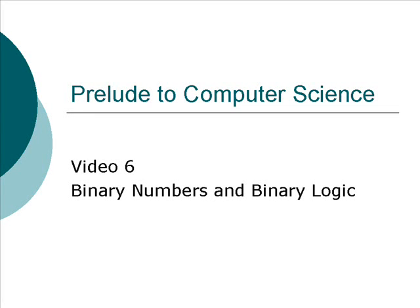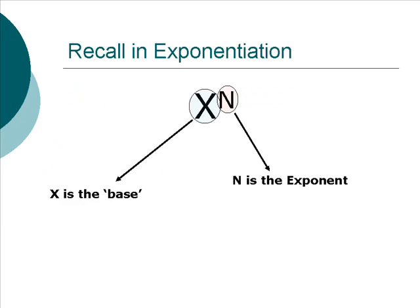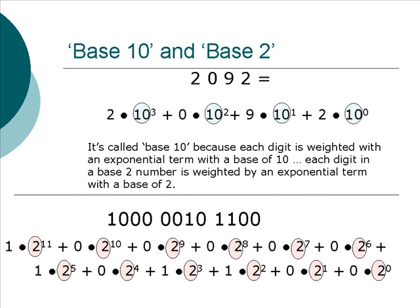Welcome again to the prelude to computer science series. This is video number six. We're going to talk a little more about binary numbers and binary logic. Recall in exponentiation that when we have x to the power of n, or x to the nth, x is what we call the base or the base of the exponentiation, and n is called the exponent.